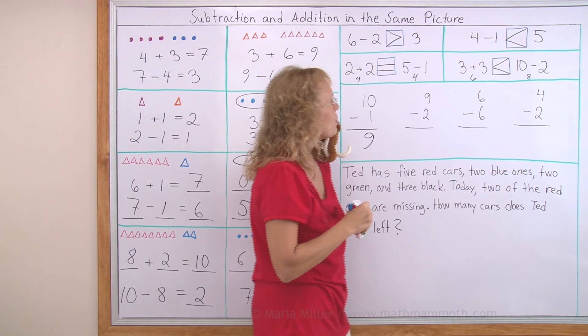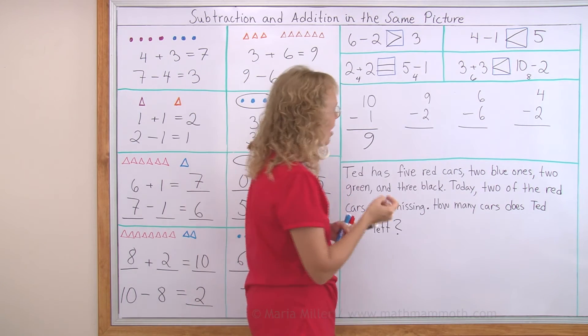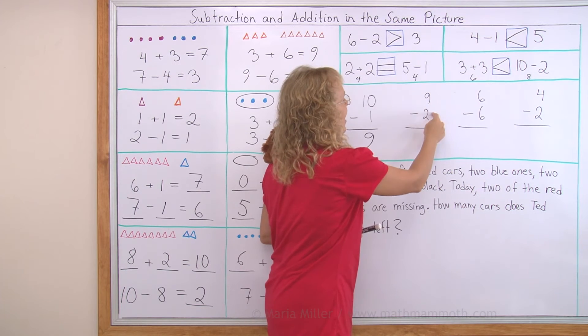Now 9 - 2. Again, count backwards. So count down. Nine, eight, seven.